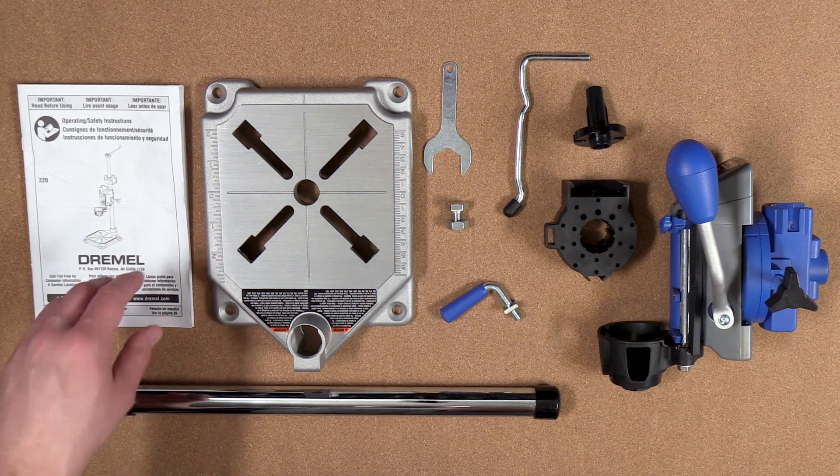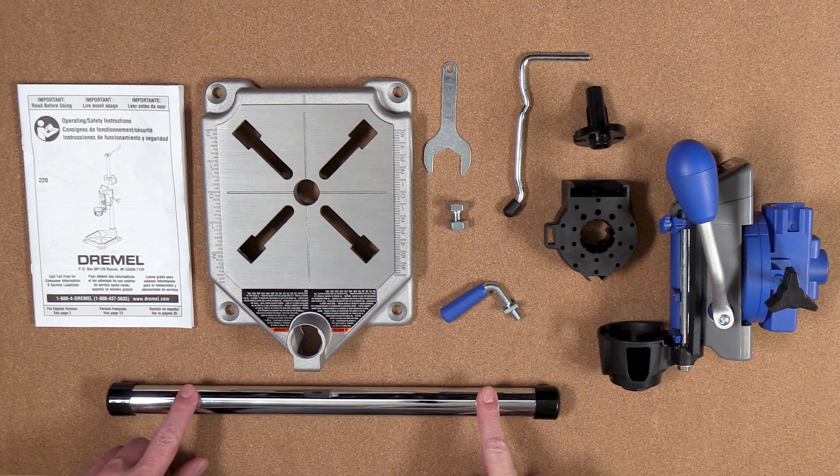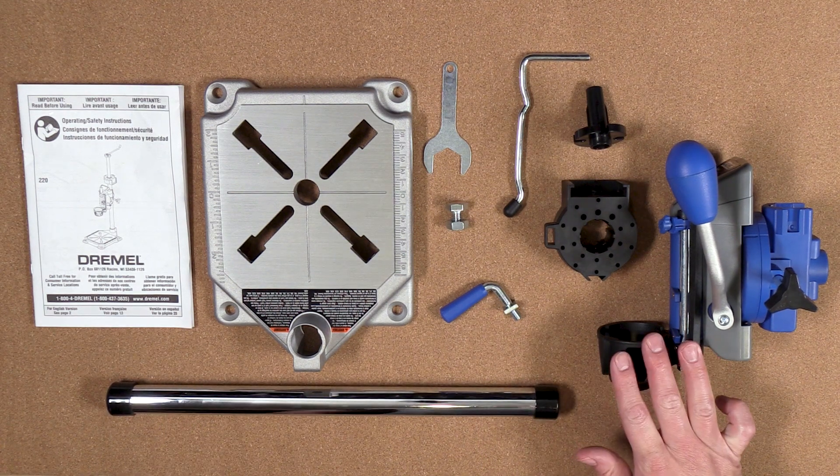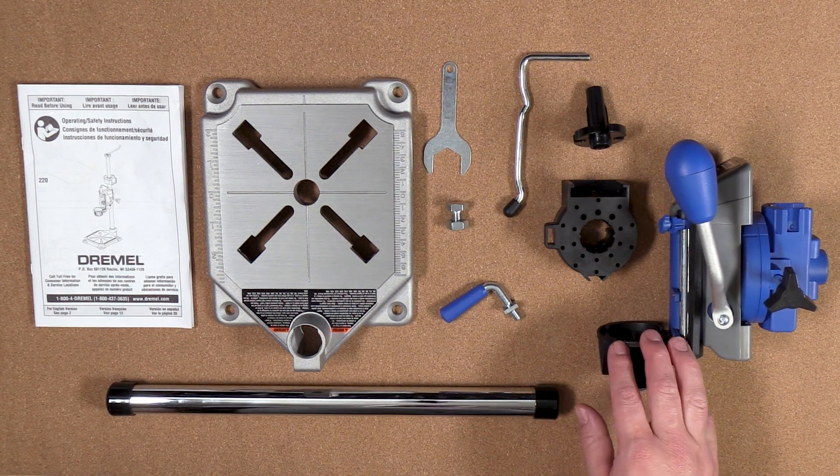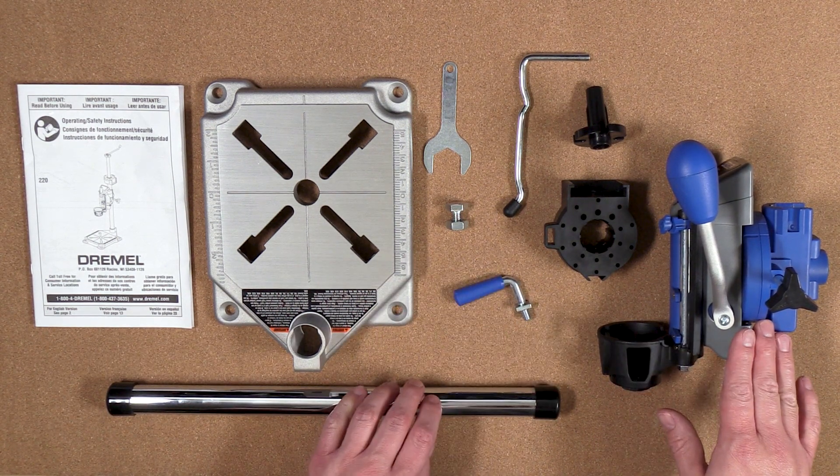In the box you'll find the instruction manual, this cast iron base plate, this telescoping stainless steel rod, the mount for your rotary tool, and this lever that lets you lock and adjust the mount up and down vertically on the shaft.